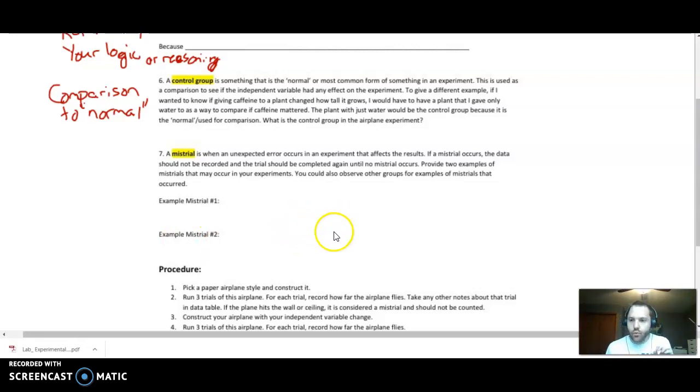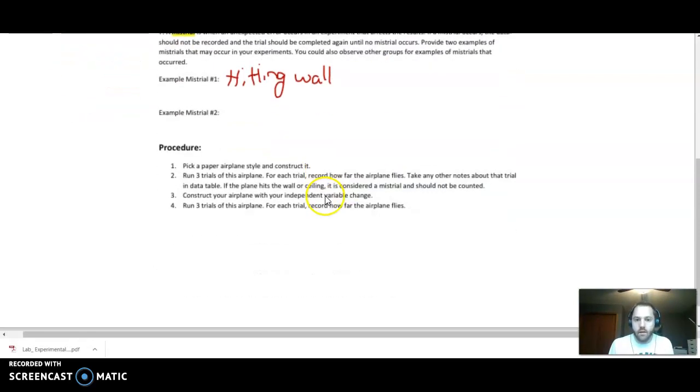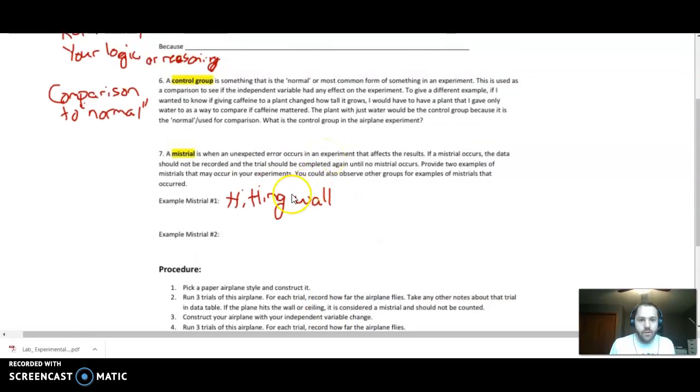And then a mistrial. Students really like to construe or confuse a mistrial with an error. However, a mistrial is something that is unexpected and occurs in an experiment that affects the results. For example, I go down to my basement and I'm going to throw an airplane. If it smacks into the wall, that's a mistrial. Something like hitting the wall, that's not going to be an error in my results. That's going to be a mistrial. I shouldn't even count that data because, clearly, that's not going to give me good data. All right. Next up, we're going to go down and actually start making these changes and throw in the airplane.